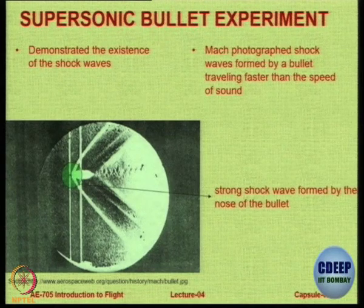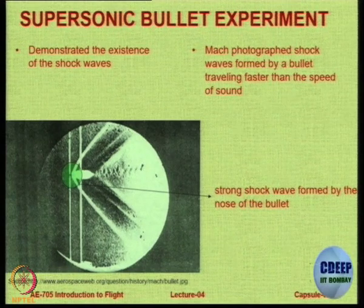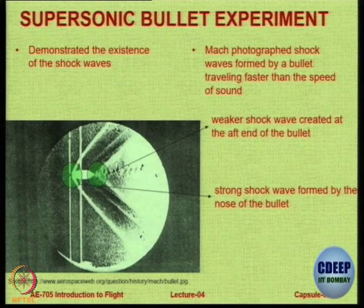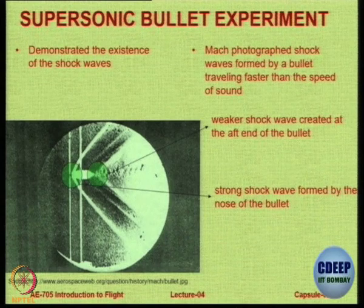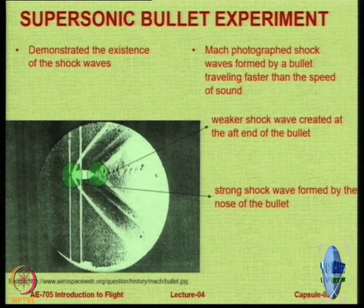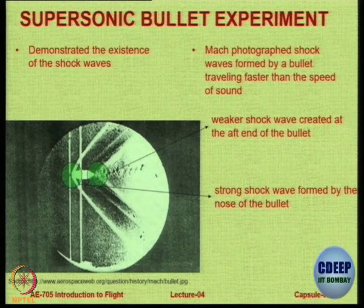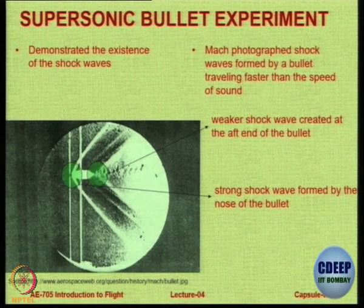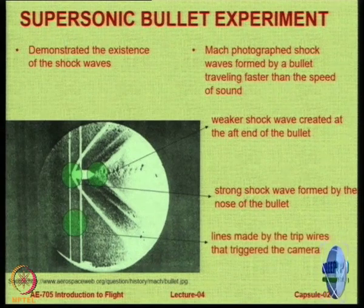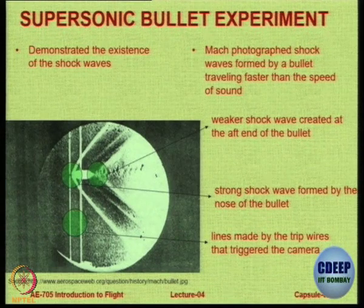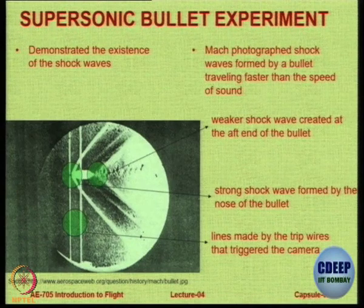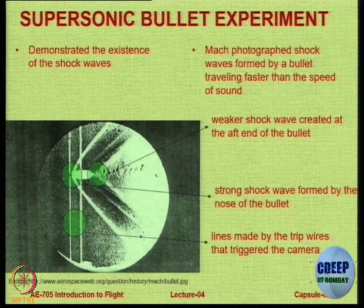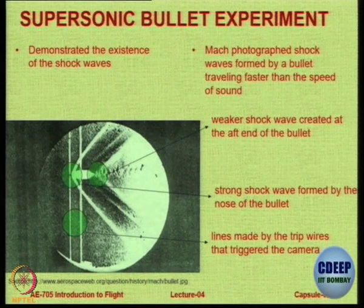In the nose there is a strong shock wave which curves at the nose and then tapers back. There are also weaker shock waves at the aft end of the bullet because the end has a conical shape. Those who study high speed aerodynamics will study strong shock waves, bow waves, weak waves, Mach waves, etc. The two vertical lines are not physical — they are lines made by the trip wires that triggered the camera used by Mach. Many people wrongly think they are a normal shock — they are not.